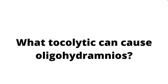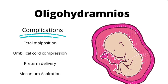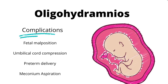We also need to know the complications of oligohydramnios. These include fetal malposition, umbilical cord compression, preterm delivery, and meconium aspiration. It's important to realize that if there is too little amniotic fluid, this can lead to fetal malposition.